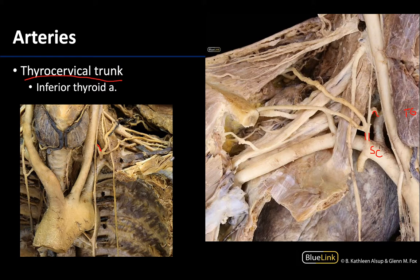Notice, particularly well in this image, the close relationship between the inferior thyroid artery and this nerve right here — the recurrent laryngeal nerve. This is an important anatomical relationship: if there is a need to ligate this artery, say for surgery involving the thyroid gland, you have to be very mindful of this close relationship because it has serious implications for the function of the larynx.